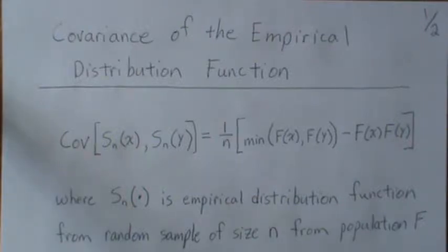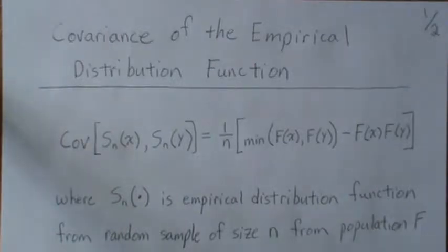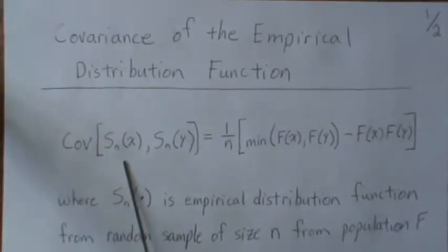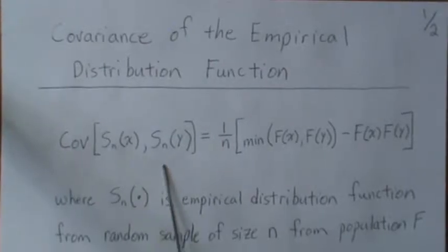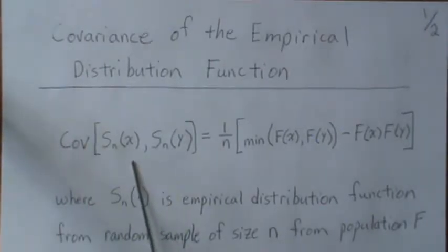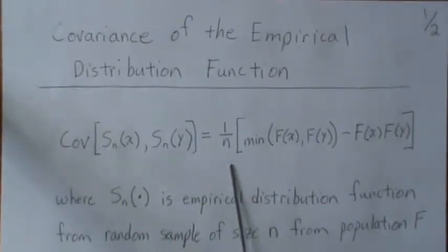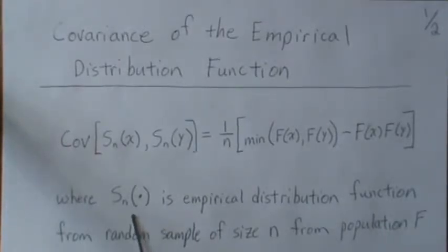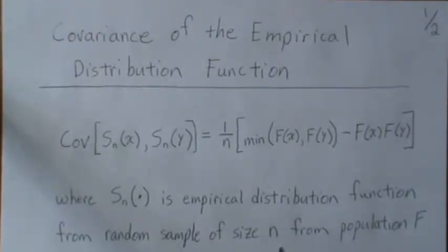In this video we're going to look at the covariance of the empirical distribution function, sometimes called the empirical CDF. We're going to show that the covariance between two values of the empirical CDF is equal to 1 over n times the minimum of F(x), F(y) minus F(x)·F(y). This is the empirical distribution of a random sample of size n from a population F.